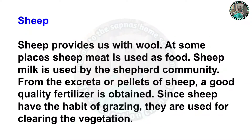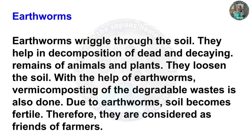Sheep: Sheep provide us with wool. At some places, sheep meat is used as food. Sheep milk is used by the shepherd community. From the excreta or pellets of sheep, a good quality of fertilizer is obtained. Since sheep have the habit of grazing, they are used for clearing the vegetation. Earthworms: Earthworms wriggle through the soil and help in decomposition of dead and decaying remains of animals and plants. They aerate the soil; wormy composting of degradable waste is also done. Due to earthworms, soil becomes fertile, and therefore they are considered friends of farmers.